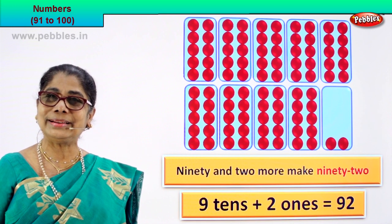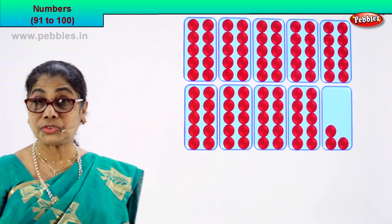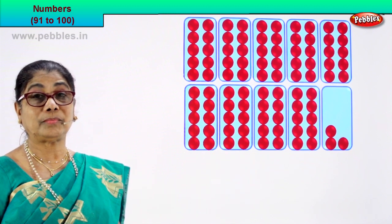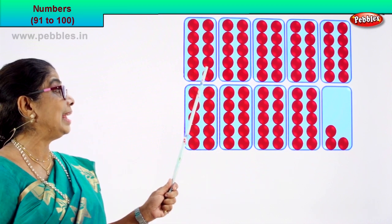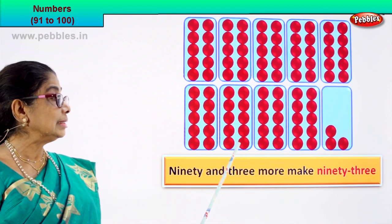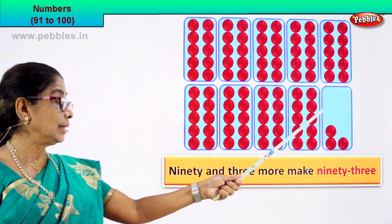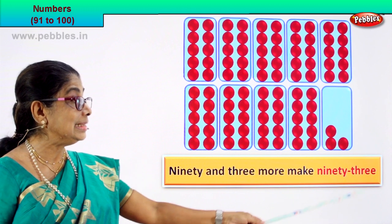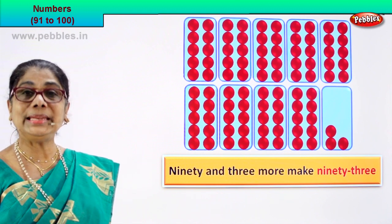Shall we take the next number? Find the boxes, count and find the numeral. Let's count how many boxes there are — each box has ten. One, two, three, four, five, six, seven, eight, nine boxes. Each box contains ten circles. Let's count in tens: 10, 20, 30, 40, 50, 60, 70, 80, 90. Then 91, 92, 93. So 90 and three more make 93. What is 90? How many tens? Nine tens.